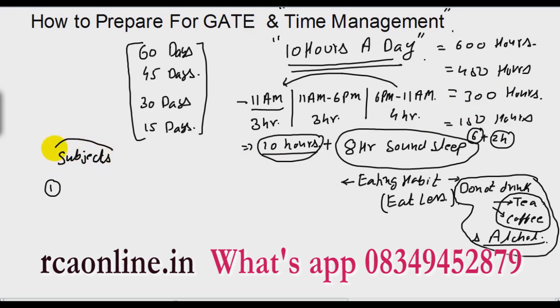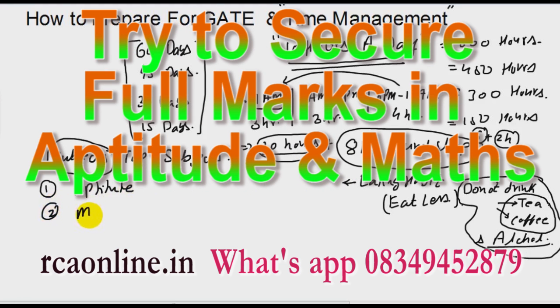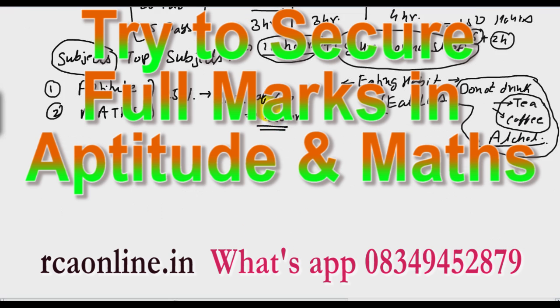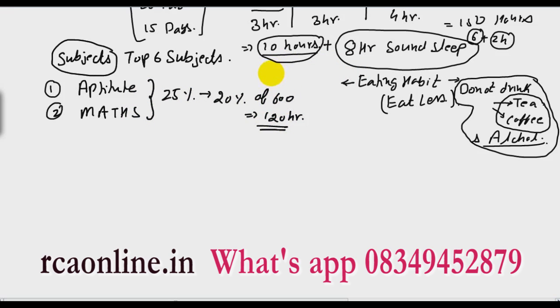Now the subjects. I will emphasize that first you read the top 6 subjects. For any student, they are Aptitude and Maths. This is common for everybody and both will have 25% weightage. Out of your time you should spend at least 20%. So 20% of 600 is around 120 hours. Give your maximum time in the last days to Aptitude and Maths. For 10 hours every day, you should spend at least 2 hours on Maths and Aptitude.